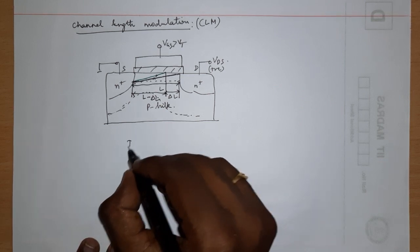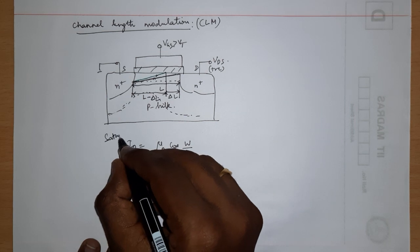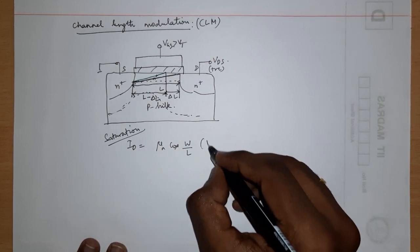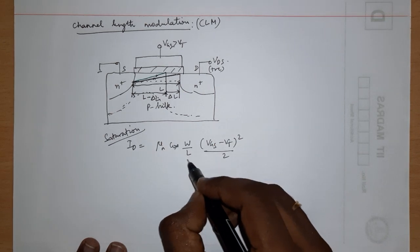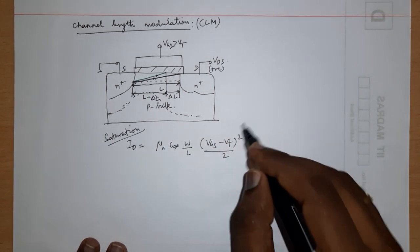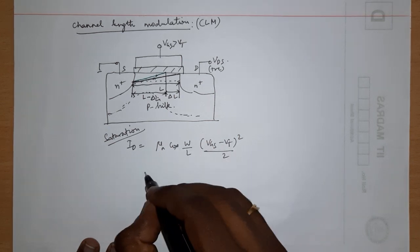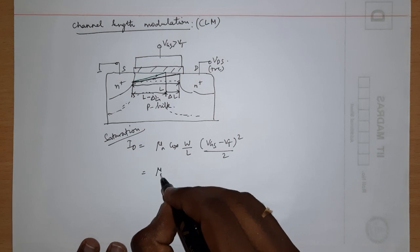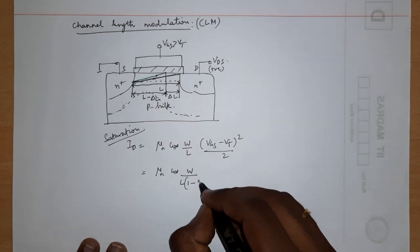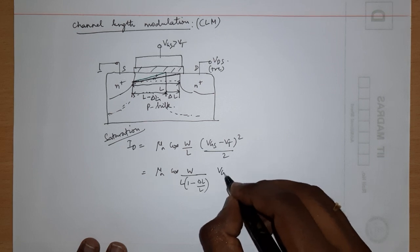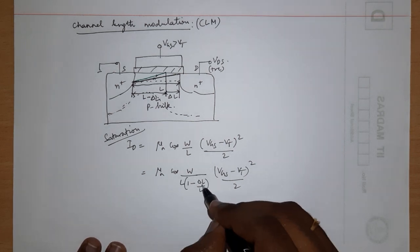So the drain current in saturation is: ID = μn·Cox·(W/L)·(VGS − VT)²/2, and we said it is independent of VDS. Now this L is becoming L minus delta L as I keep increasing VDS. So substituting L → (L − ΔL), and taking L common, we get: ID = μn·Cox·W / [L·(1 − ΔL/L)] · (VGS − VT)²/2.